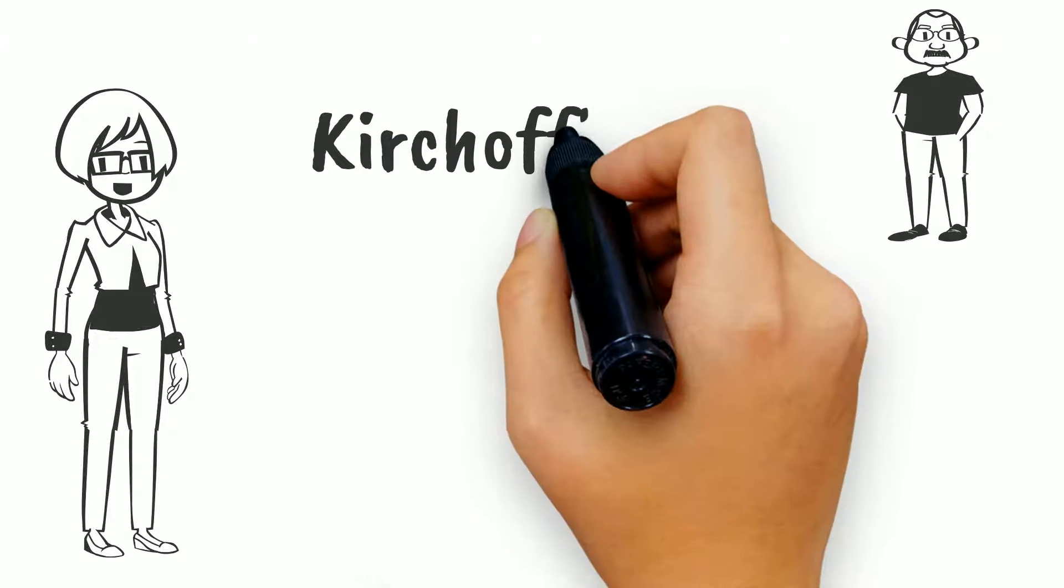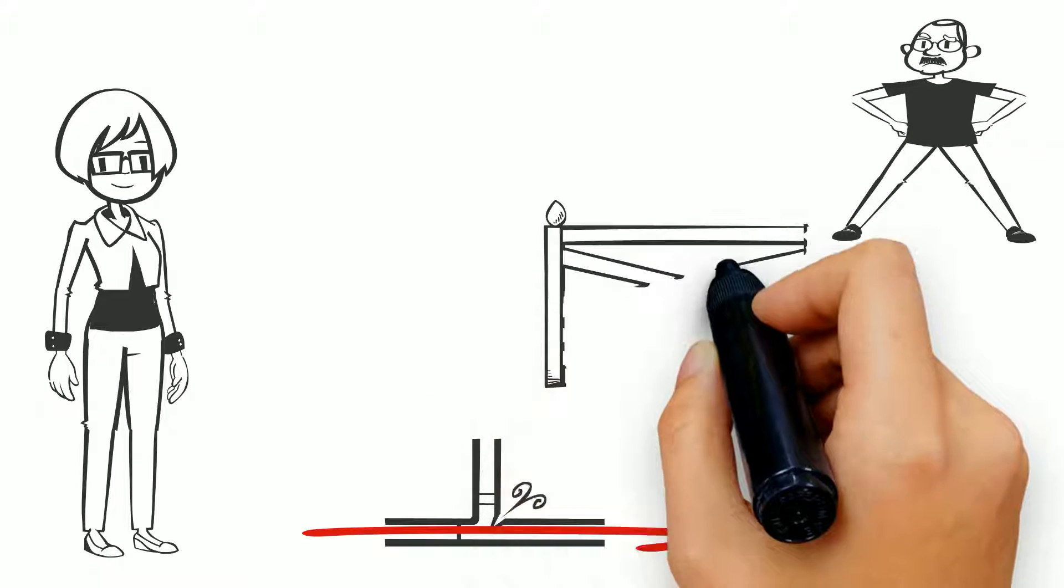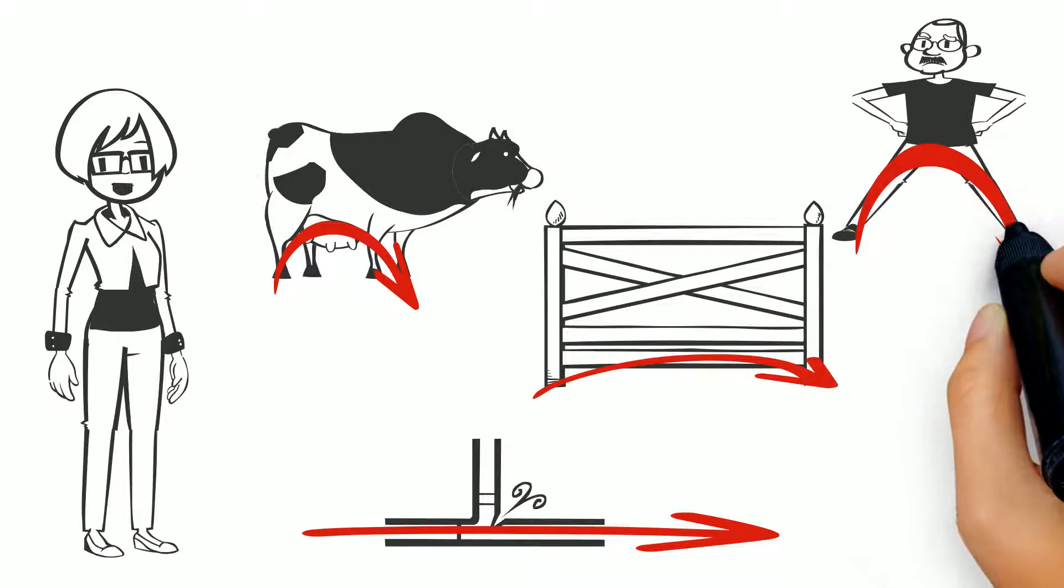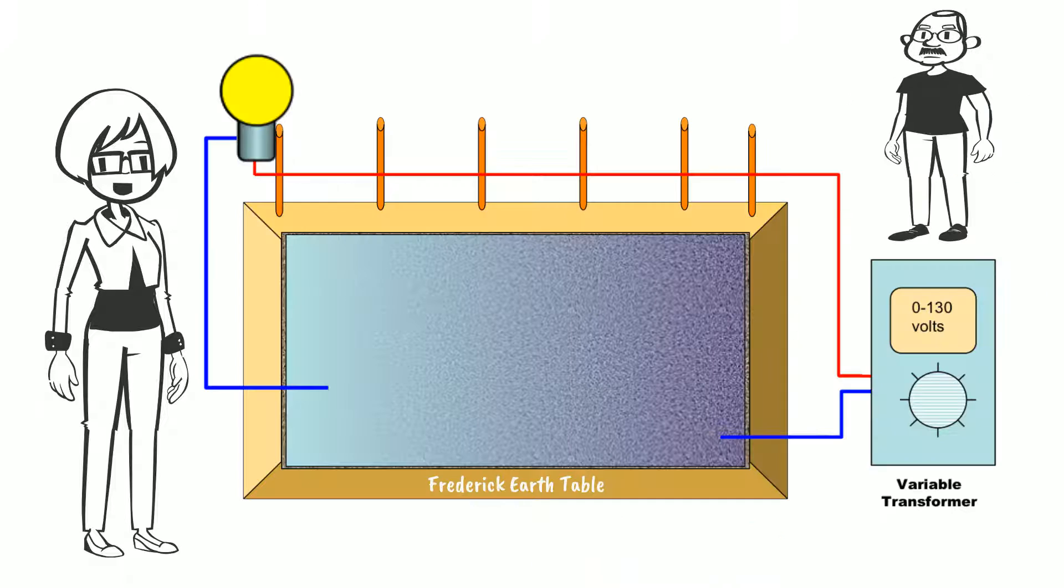The second is Kirchhoff's law. Current will take any and all paths. Current will also flow along a metal fence, wet soil, and through animals and people since we are highly conductive. Now, let's return to Ralph's earth table.